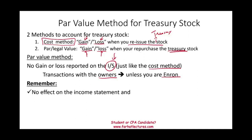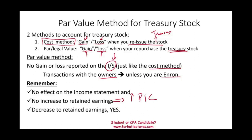A few things to remember about treasury stock in general: there is no effect on the income statement. When you have a gain, it will not increase retained earnings — instead, it increases some sort of paid-in capital. However, sometimes you might incur a loss, and that loss would reduce retained earnings. So retained earnings can be reduced by a loss but cannot be increased by treasury stock transactions.